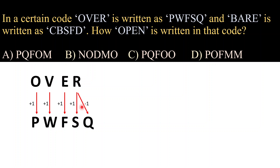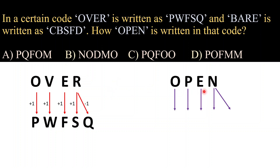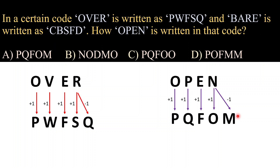The same approach is applied to code the word 'bear' — I'm giving you the homework: decode the word 'bear' and let me know your answer in the comment section. Now I am going to code the word 'open'. I have written the word 'open' here and applied the same approach: O plus one, P plus one, E plus one, N plus one, and N minus one. N minus one means the alphabet just before N, and N plus one means just after N. So the code comes to be P Q F O M — our answer is option A: PQFOM.